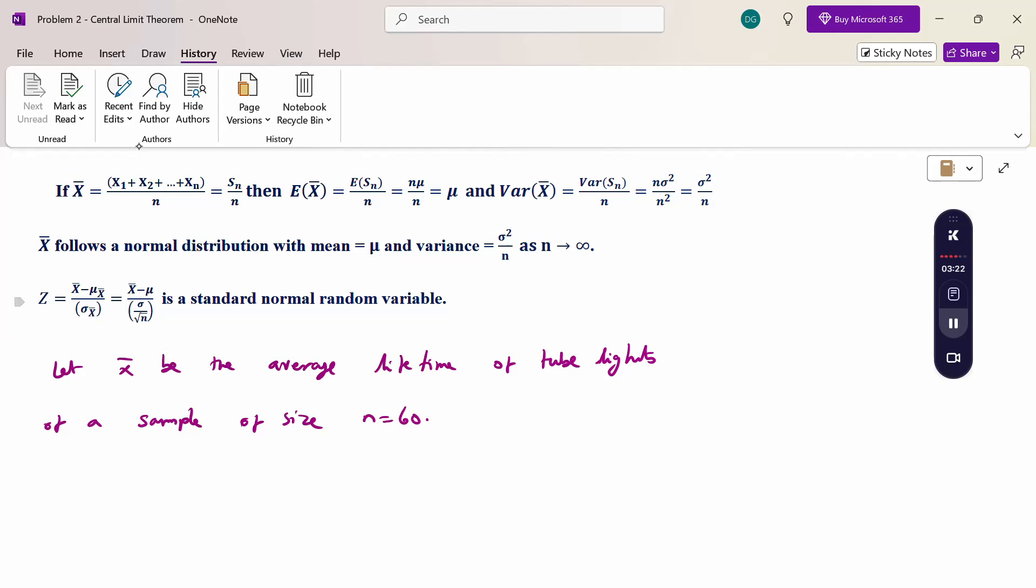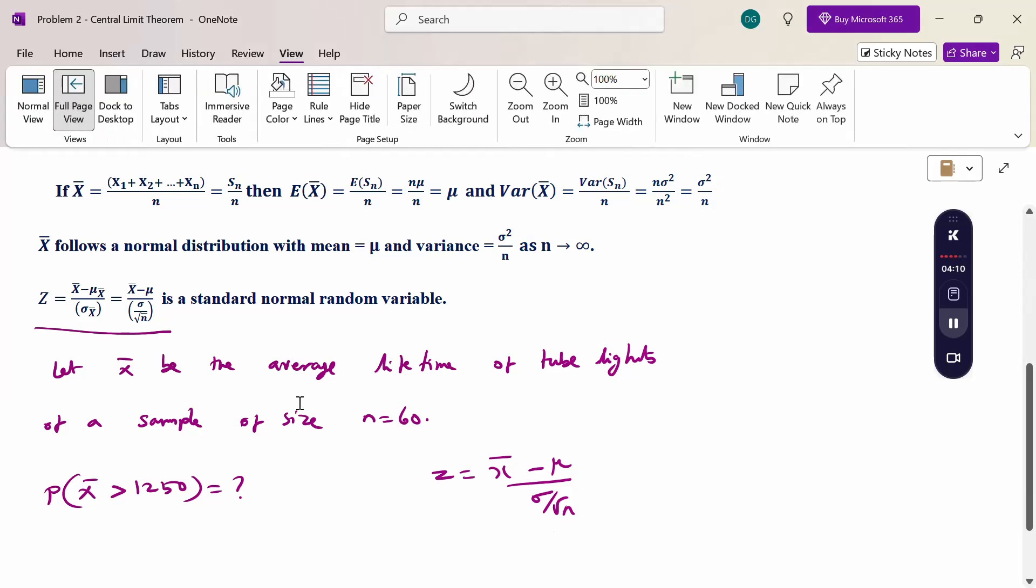By the corollary mentioned, z = (x bar - mu)/(sigma/sqrt(n)). What is the question? The question mentions probability of exceeding 1250 hours. Therefore, the probability of average x bar greater than 1250 hours. We are using this corollary for x bar. The average lifetime of 60 lights exceeds 1250 hours. This x bar we are going to convert into z. Once we have converted, then use normal distribution.